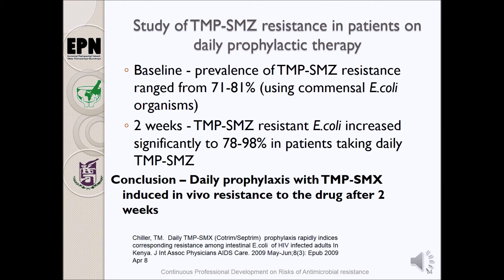Looking at studies on trimethoprim-sulfamethoxazole resistance in patients on daily prophylactic therapy — especially those taking antiretroviral agents — some studies indicated a baseline prevalence of resistance to cotrimoxazole ranging from 71 to 81 percent. For those who take cotrimoxazole daily, resistance increased significantly from 78 to 98 percent. Cotrimoxazole forms a backbone in the management of HIV and AIDS, and daily prophylaxis can actually induce in vivo resistance to the drug after just two weeks of administration.